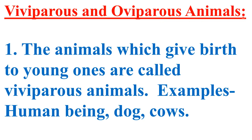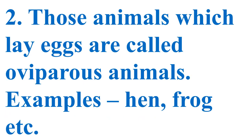Viviparous and oviparous animals: animals which give birth to young ones are called viviparous animals — examples are human beings, dogs, and cows. Those animals which lay eggs are called oviparous animals — examples include hen, frog, and fish.